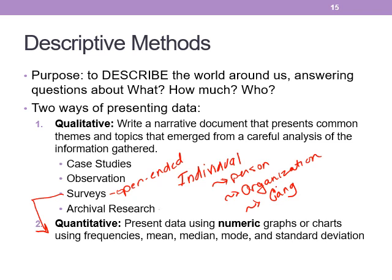Observation is simply watching, and surveys and archival research are also listed under qualitative when you're asking open-ended questions, and under quantitative when questions can be answered with numbers. Archival research can fit into both categories — if you're looking at old diaries, you'll have qualitative data; if you're looking at genetic data, you'll have quantitative data. When presenting the quantitative piece, data would use graphs or charts showing frequencies, mean, median, mode, and standard deviation.